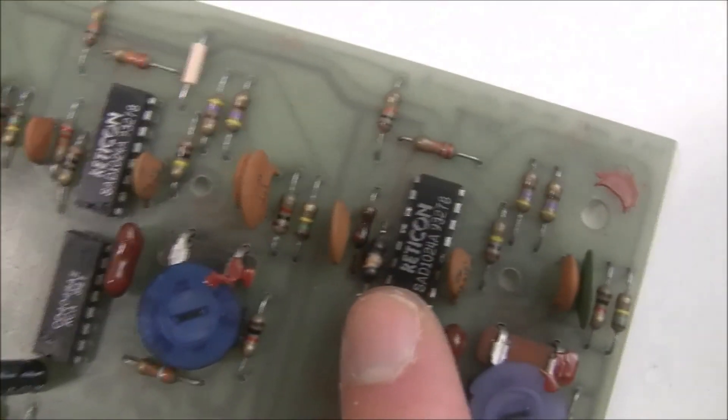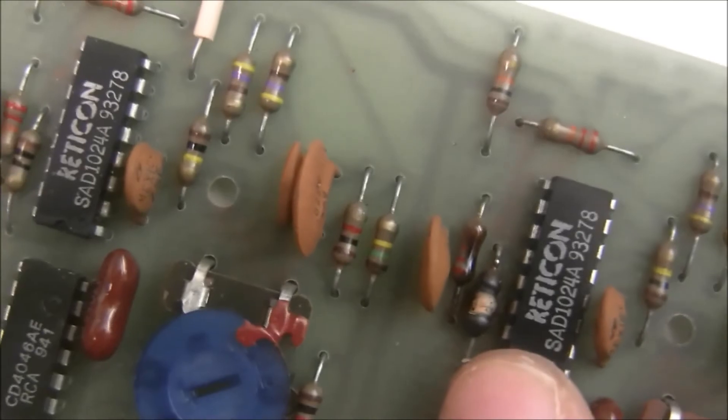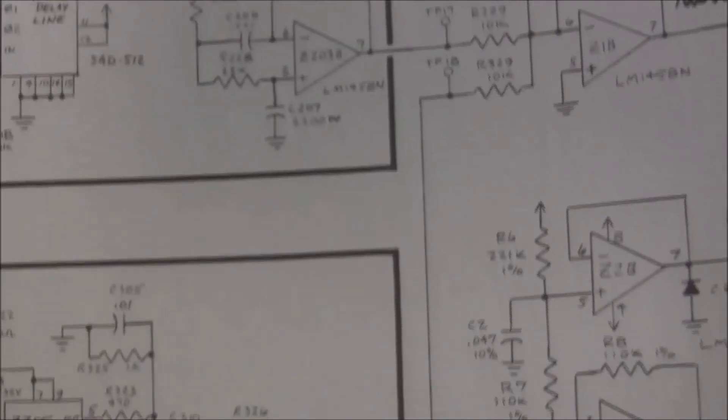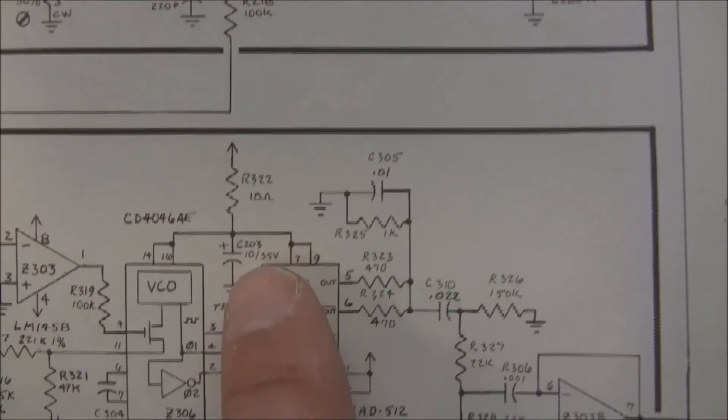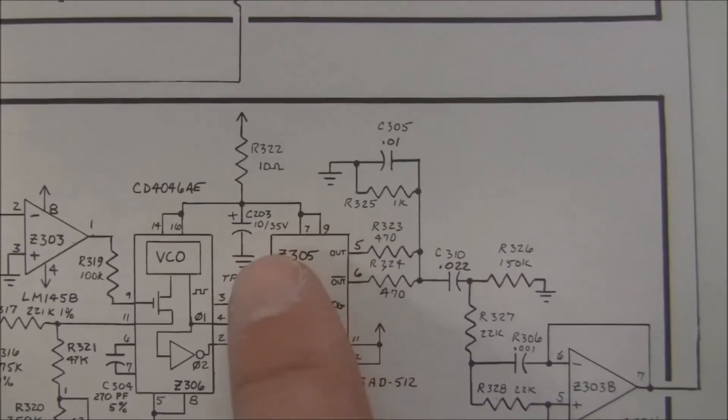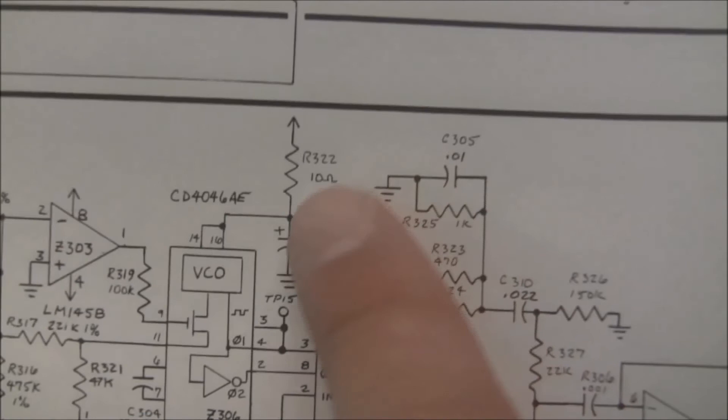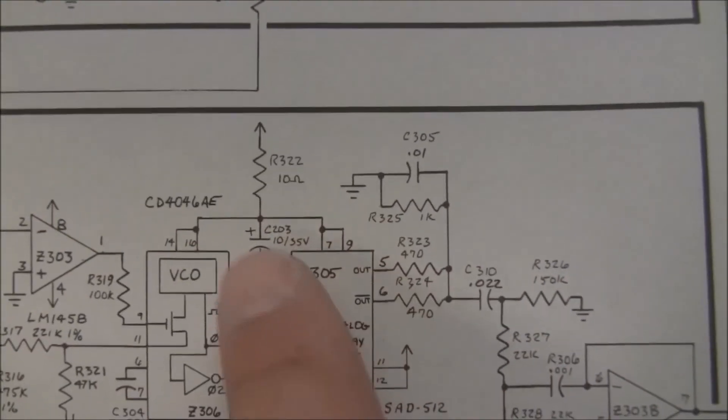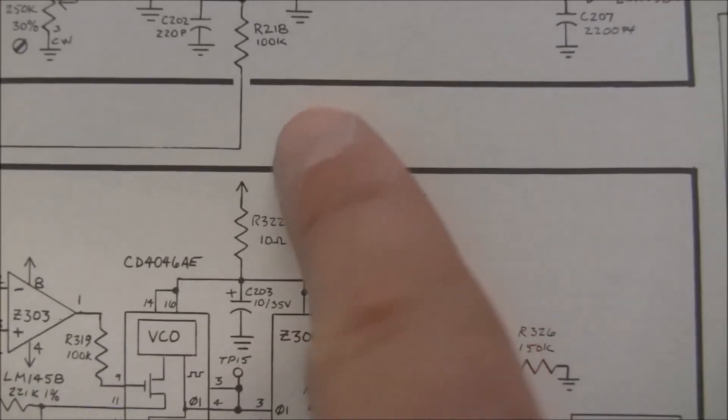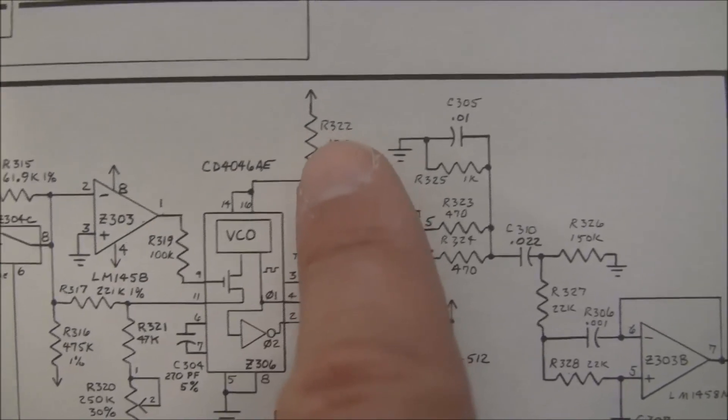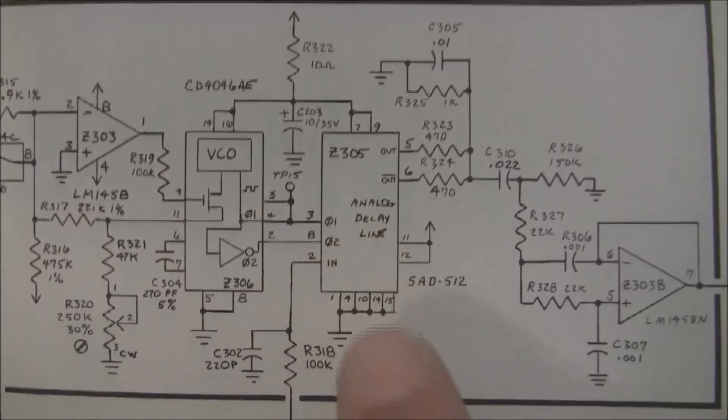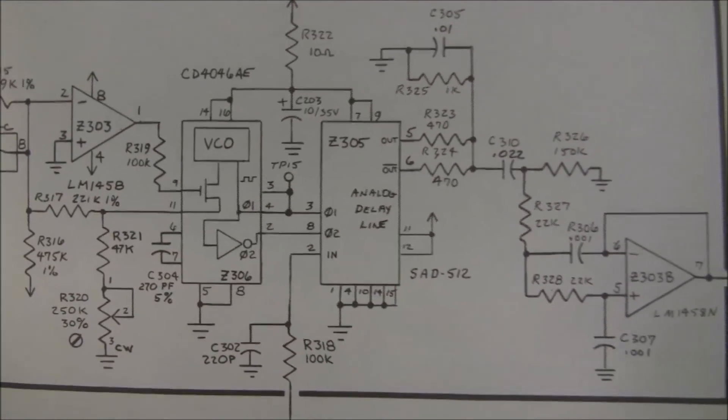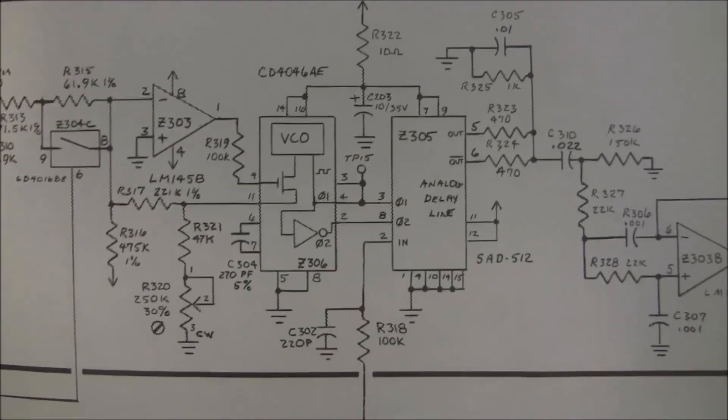Well, there's a resistor here that is incinerated. So going to the schematics, I see that this is R322, which is right here next to this tantalum capacitor. So, no doubt, before I got to this board, this tantalum capacitor was shorted and that burned up this resistor. So, my hope is that we change the resistor and this delay line chip that's right next to it did not get damaged when that tantalum capacitor shorted. So, let's change the resistor and we'll see.